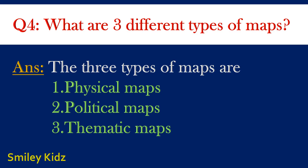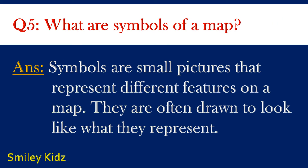Question number 5. What are symbols of a map? Answer. Symbols are small pictures that represent different features on a map. They are often drawn to look like what they represent.